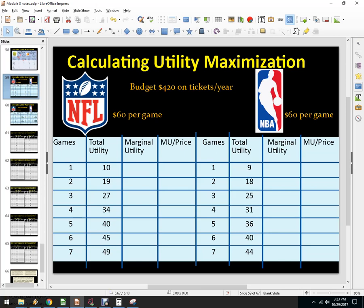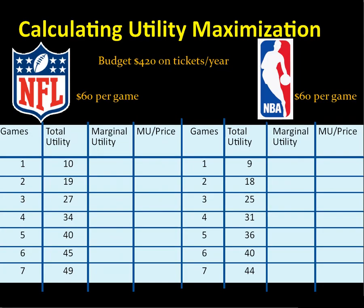In this video, I'm going to do some examples of utility maximization problems given a budget constraint, kind of what we've been doing in the last video. Here I've got something a little more realistic. You can take a consumer in a city that has an NBA team and an NFL team. Let's say that they like sports and they've budgeted $420 on tickets per year.